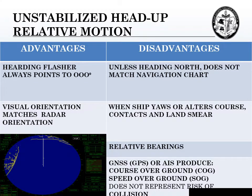First radar: unstabilized head-up relative motion radar. This was the first radar ever invented. I love this radar because it has no inputs that have errors. I call it a plug-and-play radar. The heading flasher always points to 000 degrees, which means your visual orientation matches your radar orientation. If we're navigating down a river and look out the bridge window, our visual orientation matches the radar orientation.